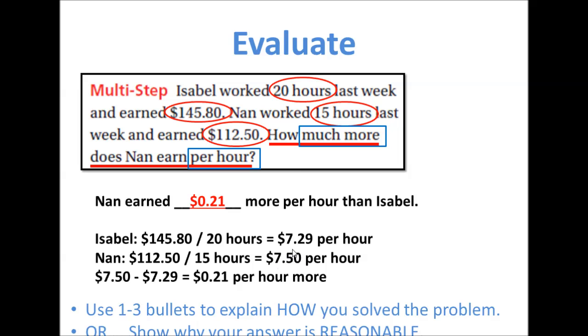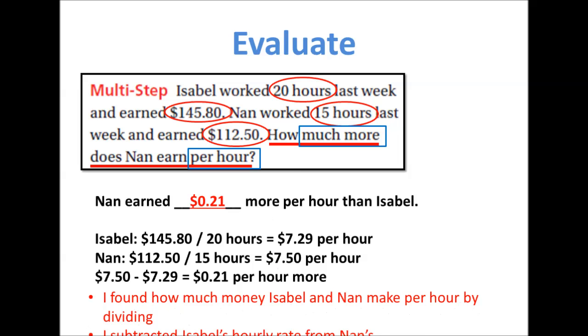Now we're going to go to the explain portion. The explain portion, I found out how much money Isabel and Nan make per hour by dividing. That's this part here and then I subtracted Isabel's hourly rate from Nan's. That very briefly explains what happens.